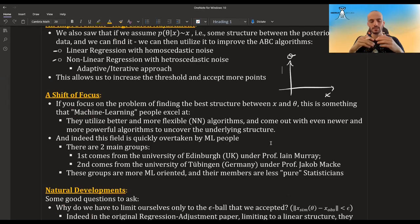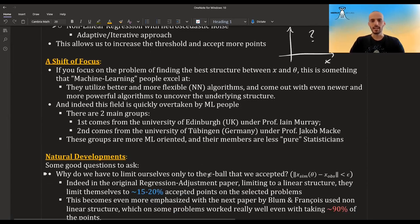So they used more sophisticated algorithms that involved more complex neural networks, and they uncover this underlying structure. And so indeed the field is quickly overtaken by the ML people. There are two main groups. The first one is from the UK, led by Professor Ian Murray. And the second one is from Germany, led by Professor Jacob Macke. And these groups are more ML oriented, and so they are less pure statisticians.